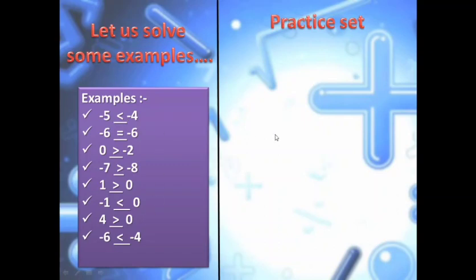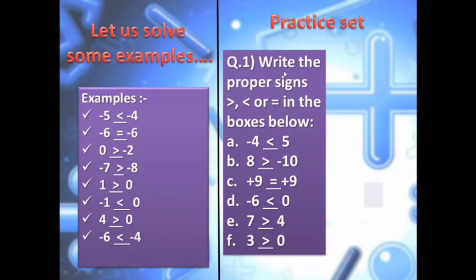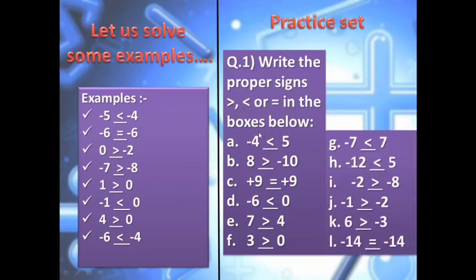Now same questions but with different numbers in the practice set. Let's solve them. Write the proper sign — greater, less, or equal to — in the boxes. Minus 4 and 5: positive numbers are always greater than negative numbers, so the greater than sign opens towards 5. For 8 and minus 10: 8 is the bigger number, so the mouth opens towards 8. Plus 9 and plus 9: equal to, since the numbers are the same. Minus 6 and 0: 0 is bigger, so the greater than sign opens towards 0. Try to solve the remaining questions on your own and check from the video to understand how well you've grasped comparing integers.